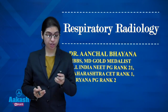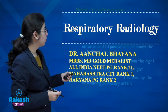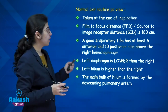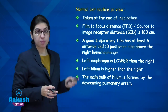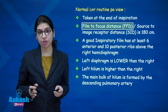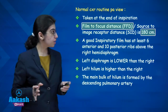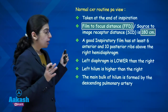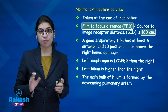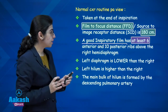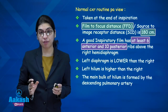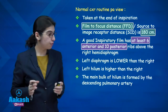Let us have a quick look at respiratory radiology. The normal chest X-ray PA view is taken at the end of inspiration. The normal film-to-focus distance or source-to-image receptive distance is 180 centimetres. Inspiratory effort is decided by the number of ribs — at least 6 anterior and at least 10 posterior ribs above the right hemidiaphragm makes it a good inspiratory film.